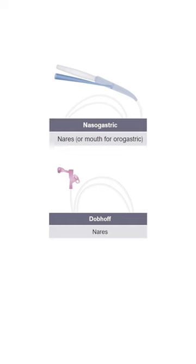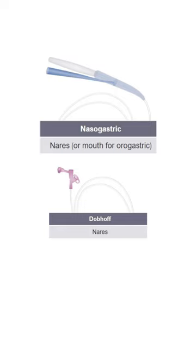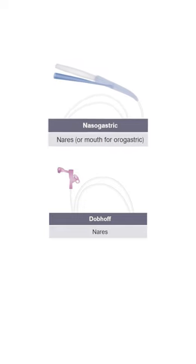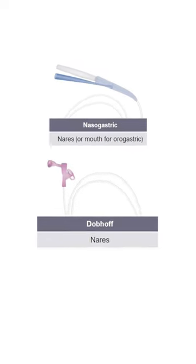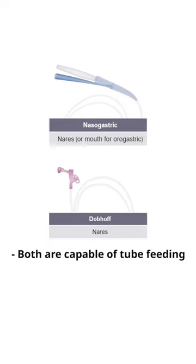Now let's look at a quick summary of the tubes we discussed. When talking about insertion point, the nasogastric tube or Salem sump can go from the mouth or oral route, whereas the Dobhoff is only going to go down the nare when inserted by a nurse or student. Both of these are capable of tube feeding, but notice the key difference here.